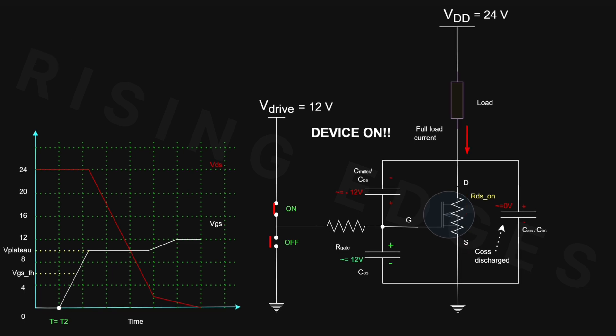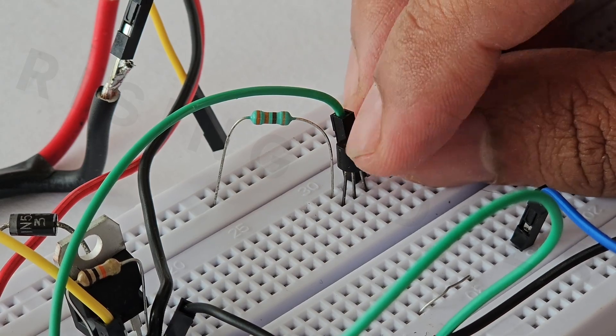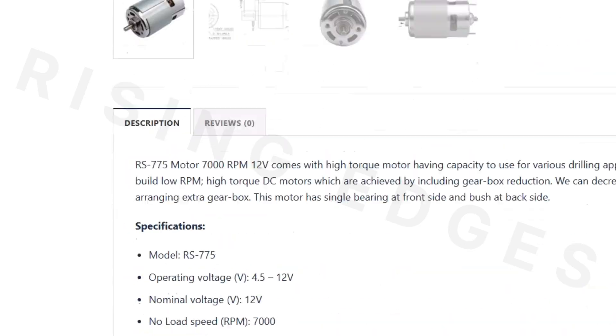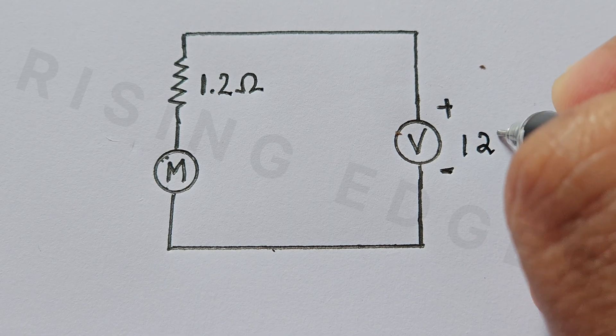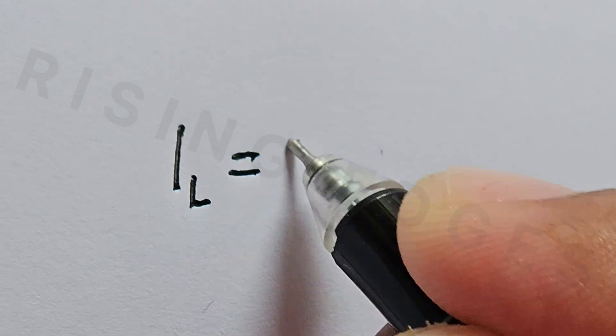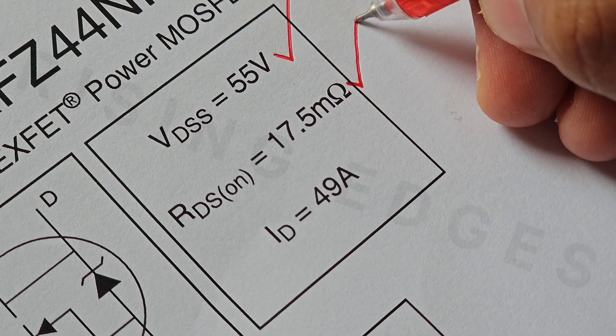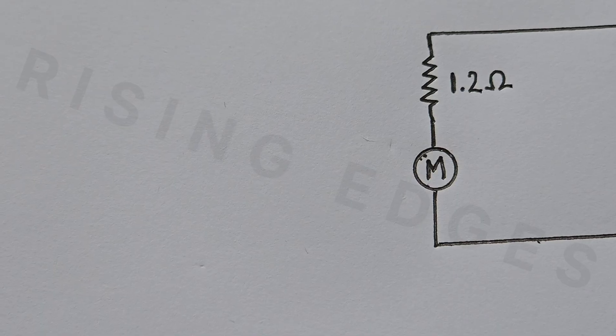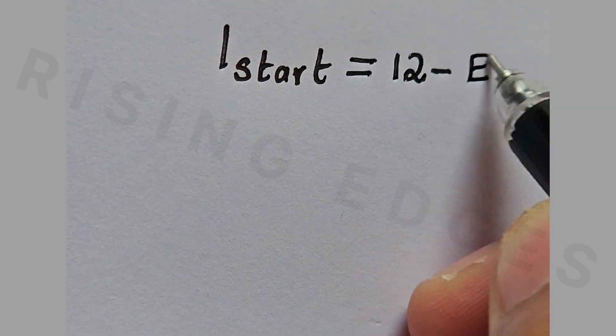Now that we understand how a MOSFET turns on, let's build a simple circuit to use it for switching a DC motor. For this example, I will be using a 12V RS775 DC motor as a high side load. This motor is rated for 12V and draws around 5.25A at full load. So the MOSFET we choose needs to handle that power comfortably. Now if we check the winding resistance, it's around 1.2 ohms. That means, at startup, when the rotor isn't moving and there is no back EMF, the motor can briefly pull up to 10A. This is both the starting and stall current.